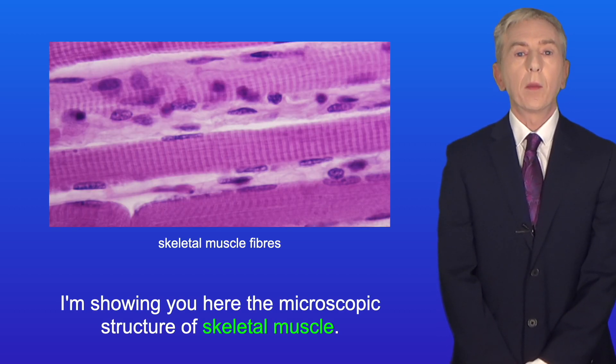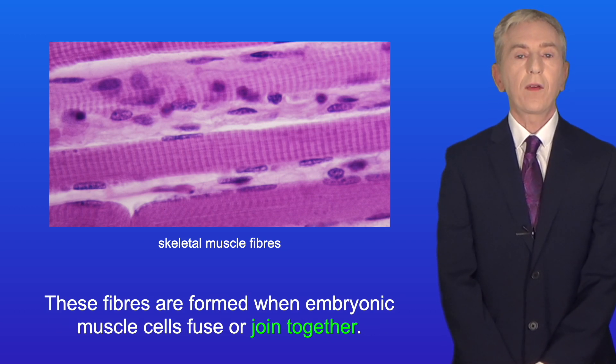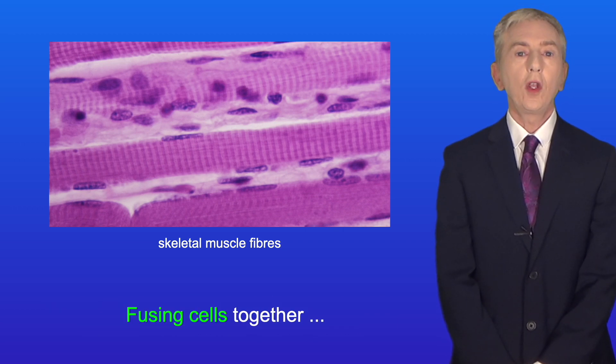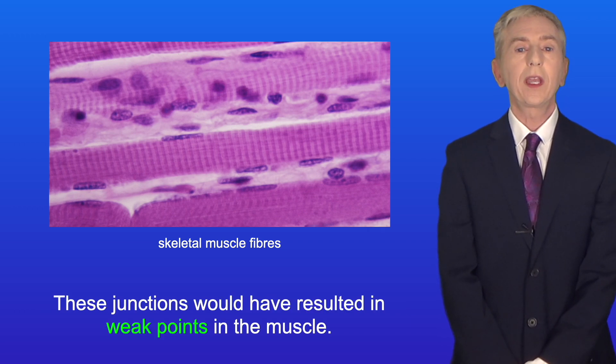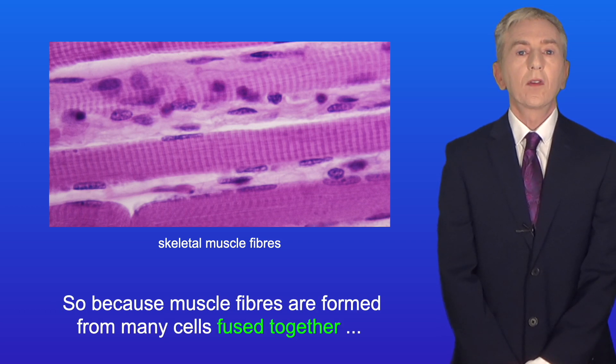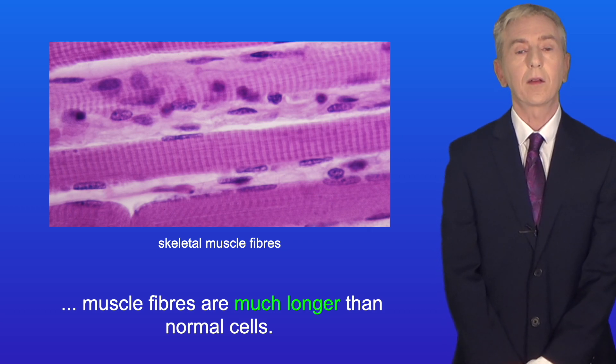I'm showing you here the microscopic structure of skeletal muscle. Now a key idea you need to understand is that skeletal muscle consists of long fibers. These fibers are formed when embryonic muscle cells fuse or join together. Fusing cells together means that we've eliminated junctions between adjacent cells and these junctions would have resulted in weak points in the muscle. So because muscle fibers are formed from many cells fused together, muscle fibers are much longer than normal cells.